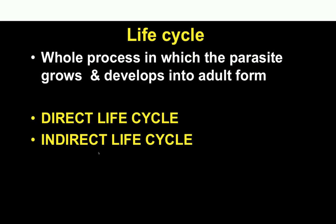Next is life cycle — the whole process in which the parasite grows and develops into adult form. There could be a direct life cycle where only one host is required and that host is a definitive host, for example Enterobius vermicularis. Then we have an indirect life cycle, in which both the definitive and intermediate hosts are required. For example, Plasmodium, which causes malaria — half the life cycle is completed in the mosquito and the rest in human beings.